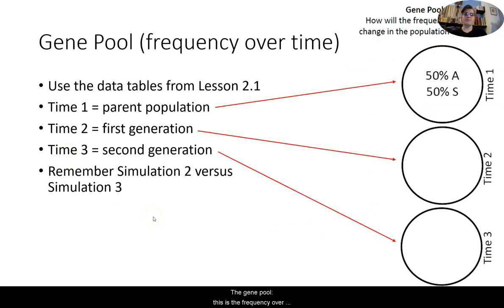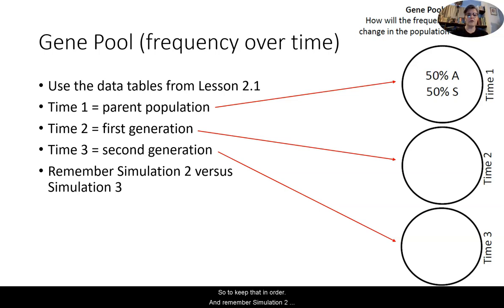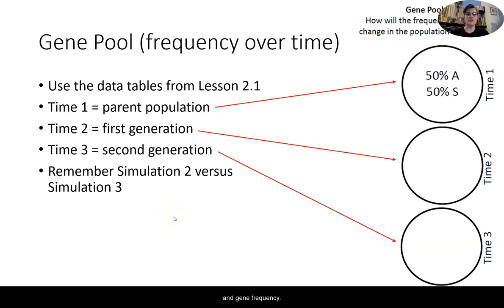The gene pool section covers frequency over time, and you're going to use the data tables from 2.1 to help you do this. Time one refers to the parent population — that original population of 50-50. Time two is the first generation, and time three is the second generation, so keep that in order. Remember, simulation two versus simulation three — there are going to be some differences there. You're tracking the generations across time for gene frequency.